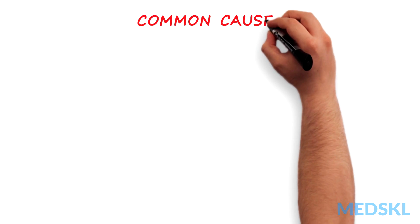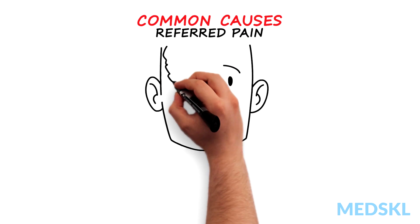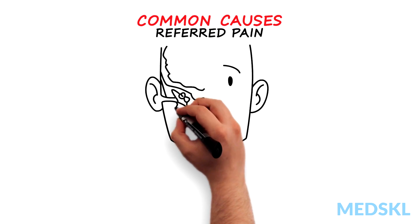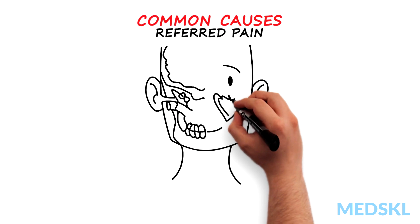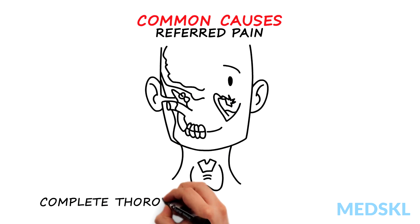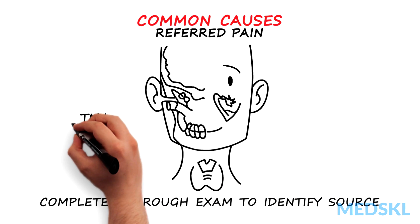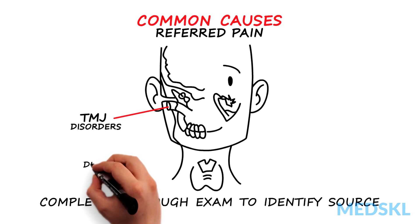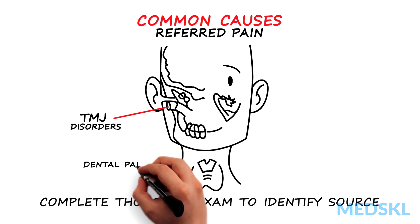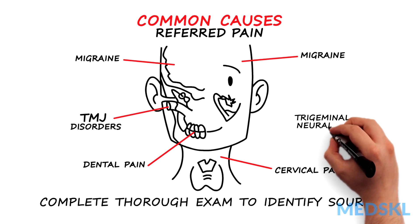Pain to the ear can also be referred from other structures in the head and neck. If no pathology is found on ear exam, complete a thorough head and neck exam to identify a source of the pain. Common causes of referred pain include TMJ disorders, dental pain, cervical pain, migraine, and trigeminal neuralgia.